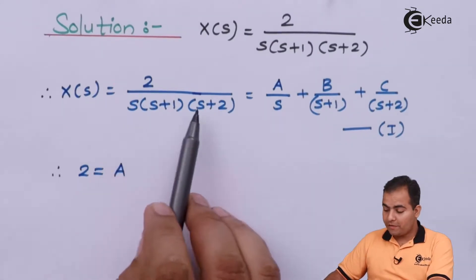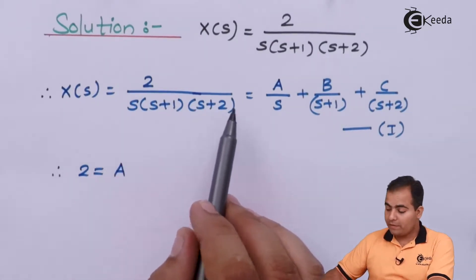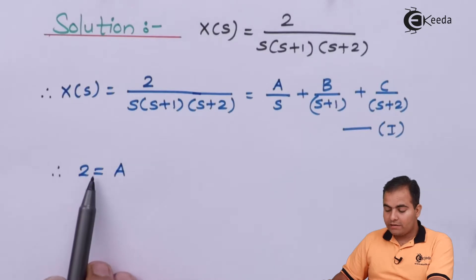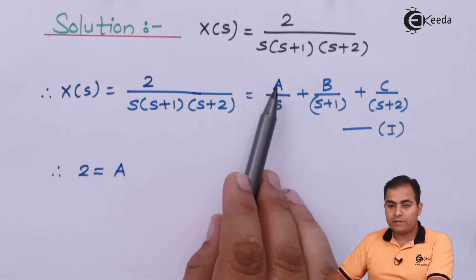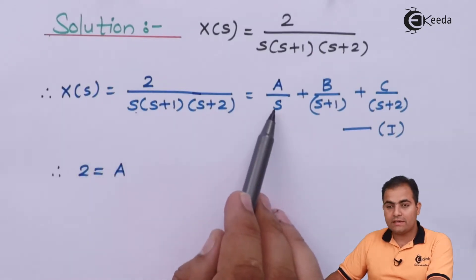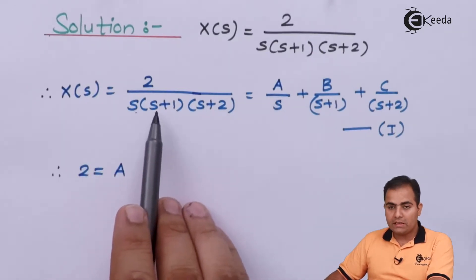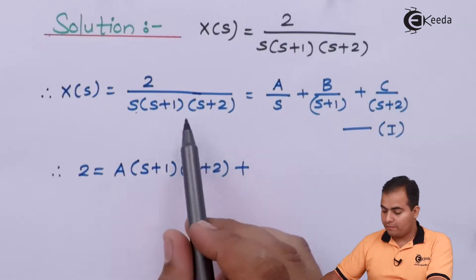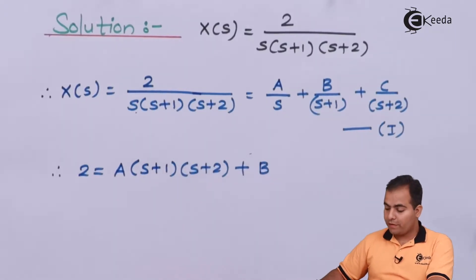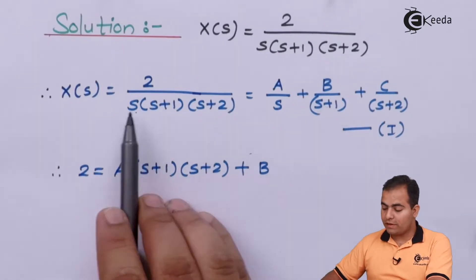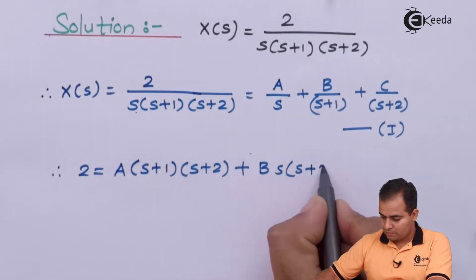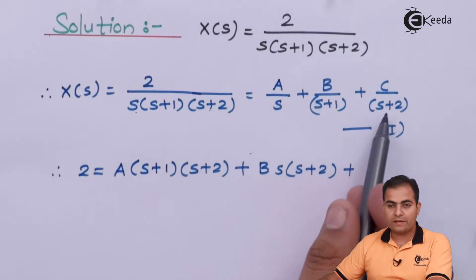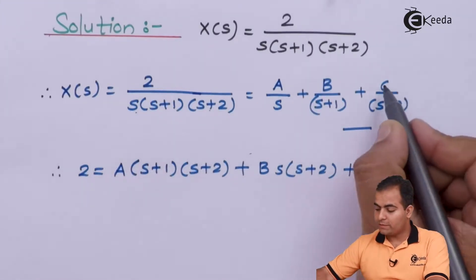Let's say variables are A, B, C. I will assign A for S, B for S plus 1, and C for S plus 2. After multiplying with B over (S+1), S plus 1 and S plus 1 get cancelled, so S into S plus 2 will be there multiplied by B. And for C, S plus 2 and S plus 2 get cancelled, giving only S into S plus 1 multiplied with C.